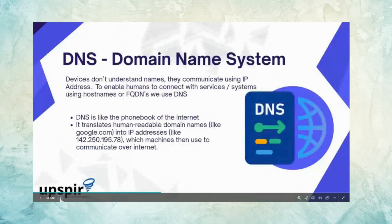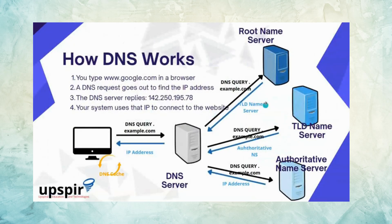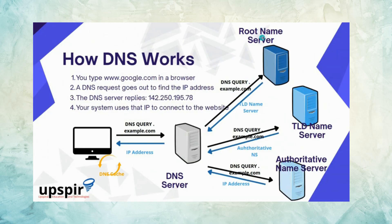DNS was discussed earlier. Whenever you do a DNS query, there are name servers which maintain the mapping of DNS names to IP addresses. When you request DNS resolution for a public domain, your request first goes to the root name server — typically represented as a dot — which has the mapping of all top-level domains like .com, .org, and .in.